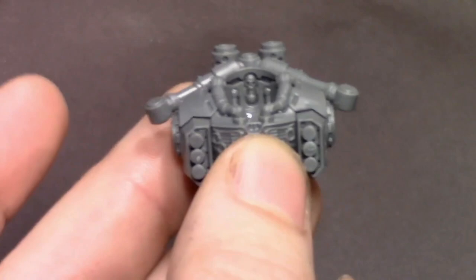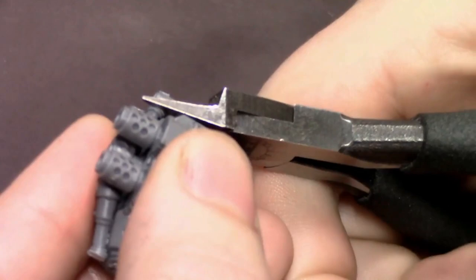Step number one: we're going to take the torso and you see these two little circular things on the end, we're just going to clip those right off. Super easy. Then there's that small little spacer and that is where we're going to start our first cut with our hobby saw. Basically I'm just going to saw off that spacer flush with the rest of the torso piece right there.